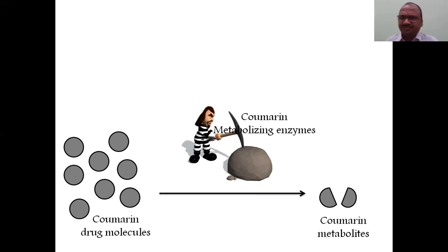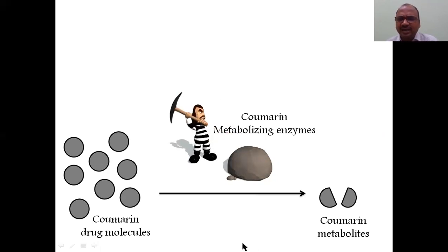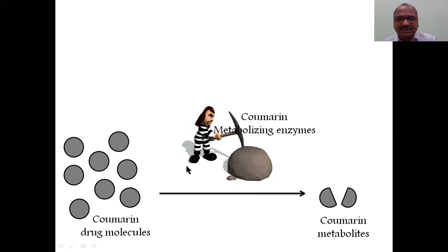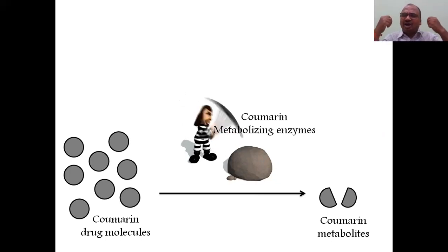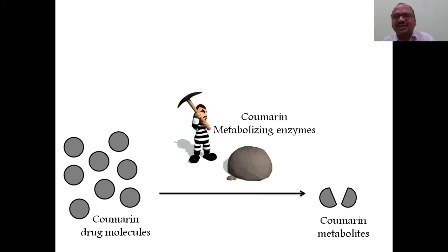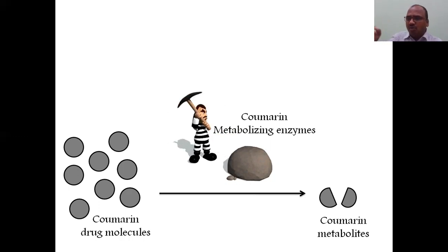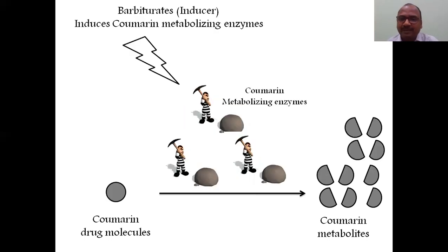Coumarin is a drug. These coumarin molecules are metabolized by the coumarin-metabolizing enzyme. The enzyme takes each molecule, breaks down the coumarin, and makes a coumarin metabolite. These enzymes are present in the liver — they are the metabolizing enzymes. So this is called the coumarin-metabolizing enzyme, which breaks the coumarin molecule into coumarin metabolites.